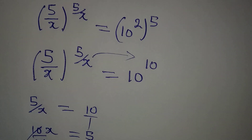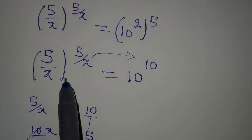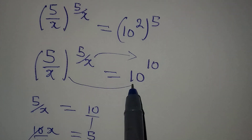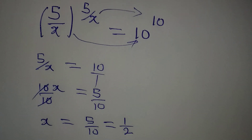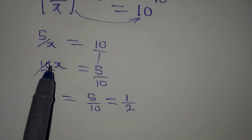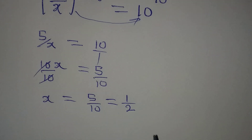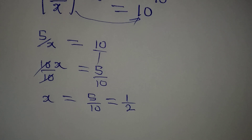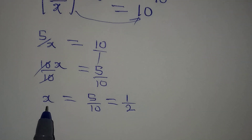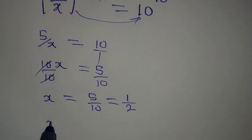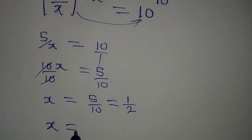Working with the base numbers as well, we also get 5/x = 10, which gives the same result. So whether we compare the powers or the base numbers, x equals 1/2.